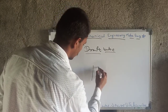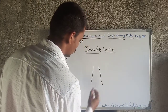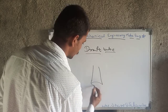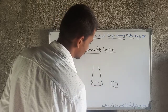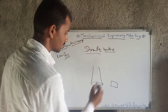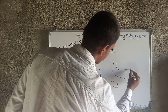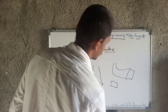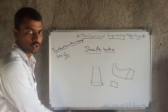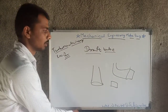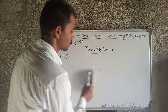The Draft Tube may be in a shape of increasing area; that may be circular shape, rectangular shape, or a bend shape. There are a number of different types of Draft Tubes, but we are not going too deep into Draft Tubes.